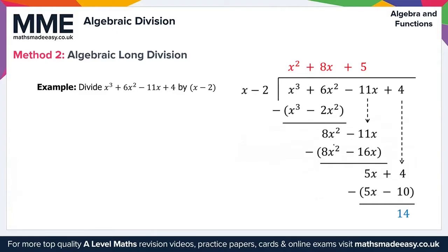We divide 4x squared by x to get 4x, and place this at the top. We multiply 4x by x minus 2 to get 4x squared minus 8x. We perform the subtraction and get 5x, then bring the plus 4 down. We divide 5x by x to get 5, place this at the top, and multiply 5 by x minus 2 to get 5x minus 10. Performing the final subtraction gives us 14, which is the remainder.